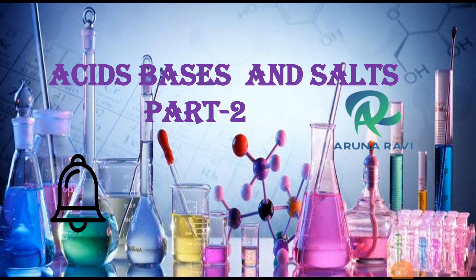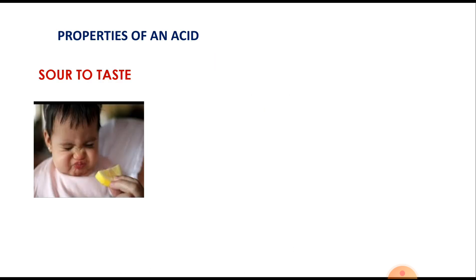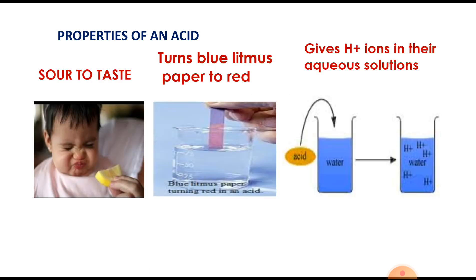Hello children, we are going to learn about natural indicators — different petals of flowers, vegetables, turmeric, onion. We are also going to recall the previous session on properties of acids and bases.